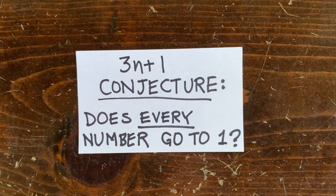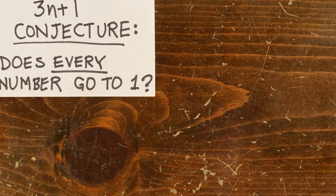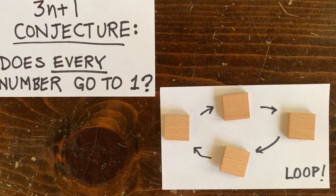Okay, we checked a bunch of numbers and they all go to 1. But nobody knows if every number goes to 1. For example, there might be some number that just wanders off into infinity. Or there might be a loop. Some number might lead back to itself and then just go round and round, never reaching 1.